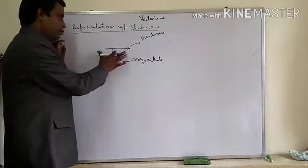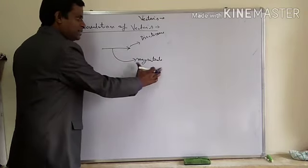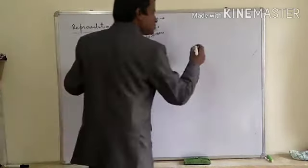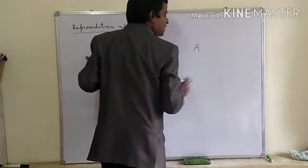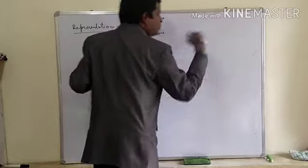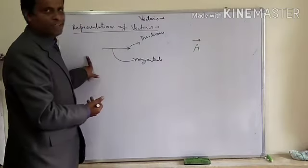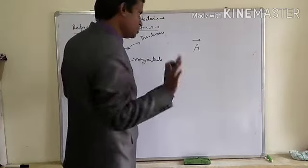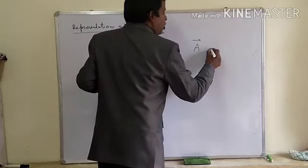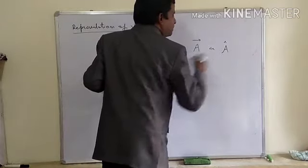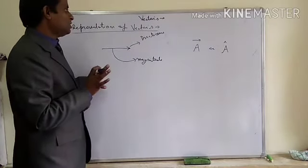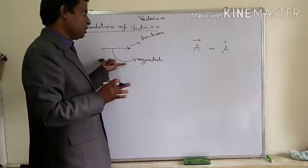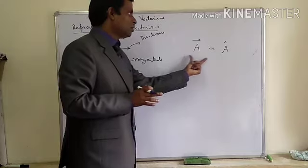In the diagrammatic way, by forming the arrow, the length of the arrow is called the magnitude and the head of the arrow is called the direction. There is also a symbolic representation. If you are representing anything in vector form, you will take an arrow on top of that particular letter. So a vector quantity will be represented in the form of a capital or small letter with the help of an arrow or a cap.